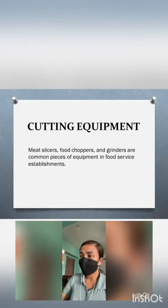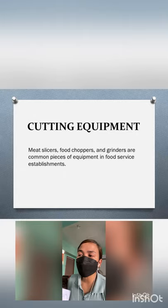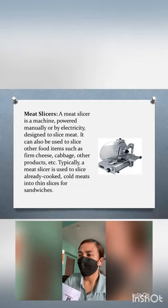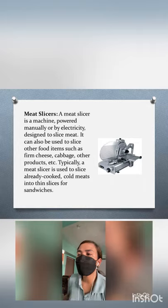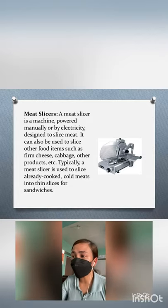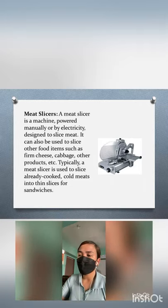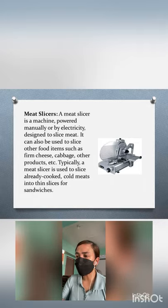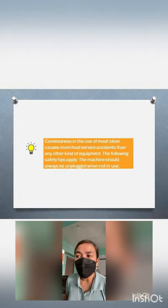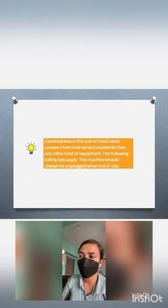Next, we have cutting equipment. Meat slicers, food choppers, and grinders are common pieces of equipment in food service establishments. A meat slicer is a machine powered manually or by electricity designed to slice meat. It can also be used to slice firm cheese, cabbage, and other products. Typically, a meat slicer is used to slice already cooked or cold meats into thin slices for sandwiches. Carelessness in the use of a meat slicer can cause more food service accidents than almost any other equipment, so the machine should always be unplugged when not in use.